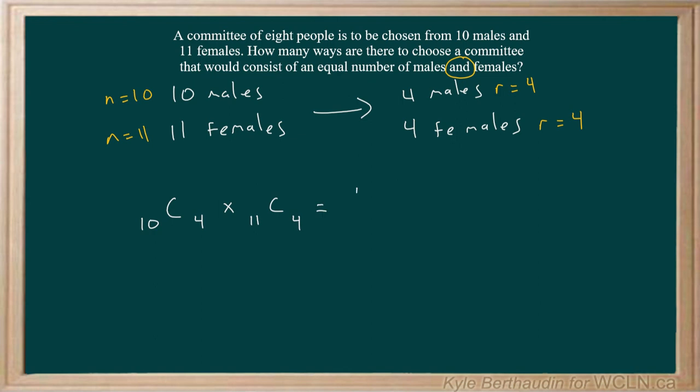Putting these numbers into our equations, we get 10 factorial divided by 4 factorial multiplied by 10 minus 4, or 6 factorial.